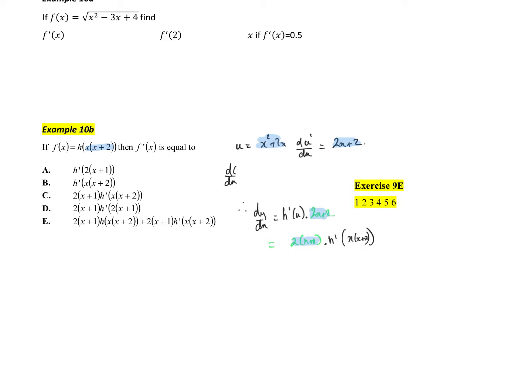To the h of x, so there's my little factorizing 2x plus 1 times h dash of whatever u was, which is x squared plus 2x. And that looks like it matches off to c, doesn't it?